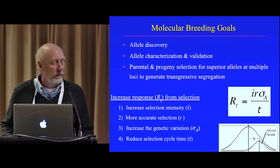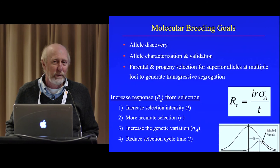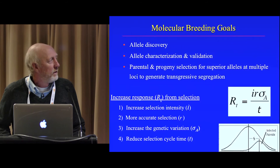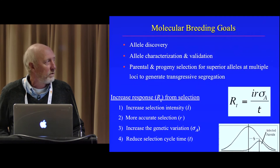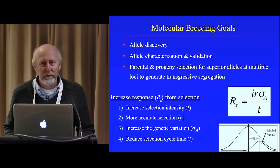The breeders equation is an important equation — if you're going to memorize one equation, this will be the one to remember. We can increase our gain from selection by increasing the selection intensity, improving the accuracy of our selection procedure, increasing the genetic variation, or we can reduce the cycle time. It's important to remember that the cycle time is in the denominator, so that is going to have the most influence on our gain from selection.